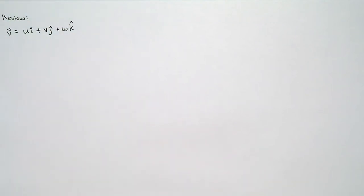In Cartesian coordinates, the XYZ system, we typically call our velocity components U in the X direction, V in the Y direction, and W in the Z direction. That's how we define our velocity vector.